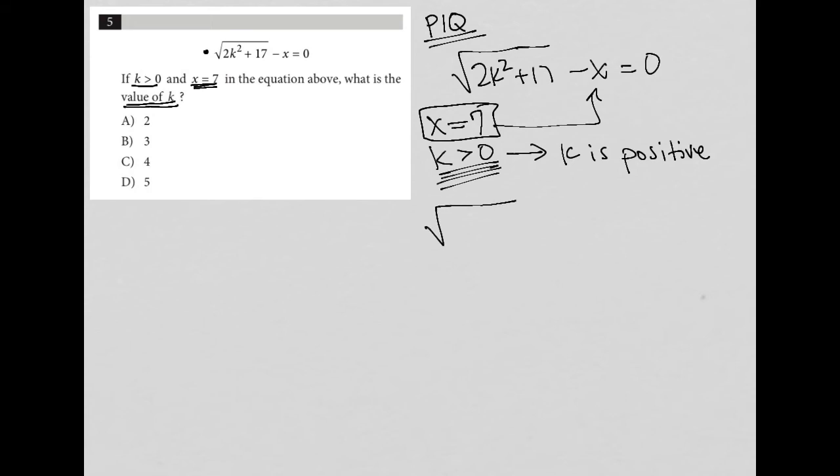My equation becomes square root of 2k squared plus 17 minus 7 equals 0. I can solve for k by adding 7 to both sides. So I have the square root of 2k squared plus 17 equals positive 7.